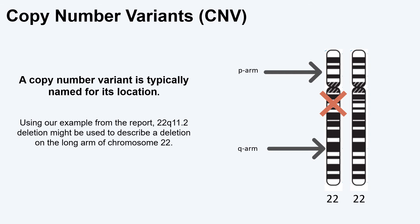If you look at the chromosome, they have a banding or striped pattern. This is actually what they look like under a microscope. The 11.2 of 22q11.2 tells exactly what band or stripe of the chromosome has the deletion.